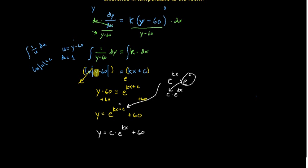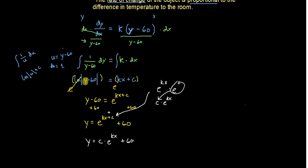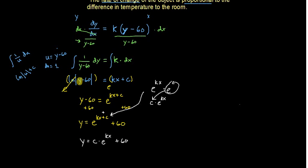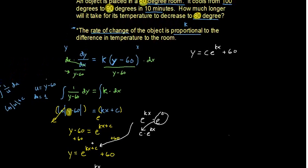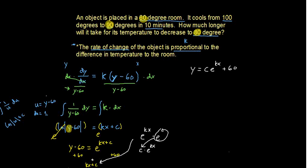Now we have our equation. We can actually start solving this problem. So I'm going to rewrite this up here, closer to our word problem, e to the kx plus 60. And we can start looking at our initial conditions and plug some things in here.